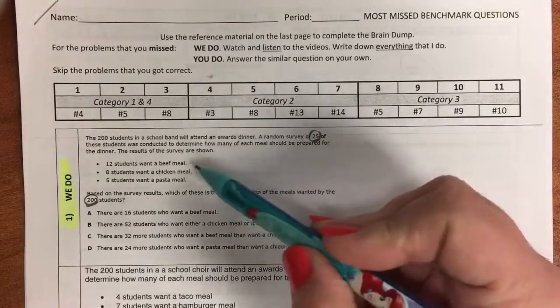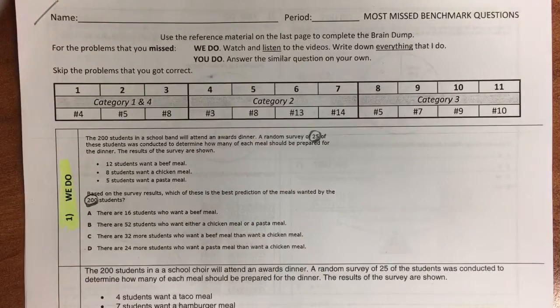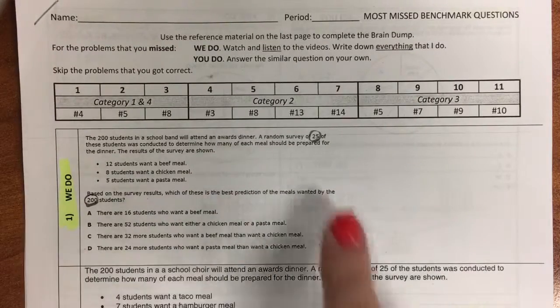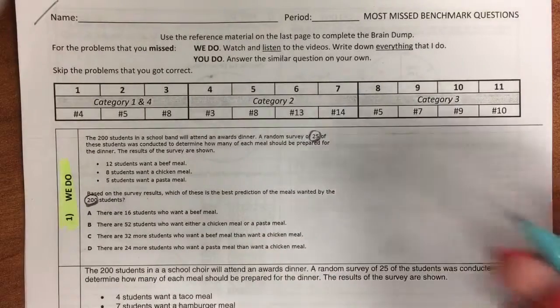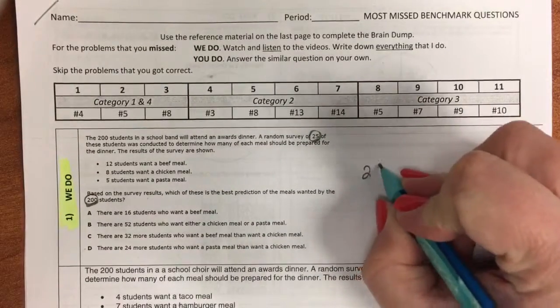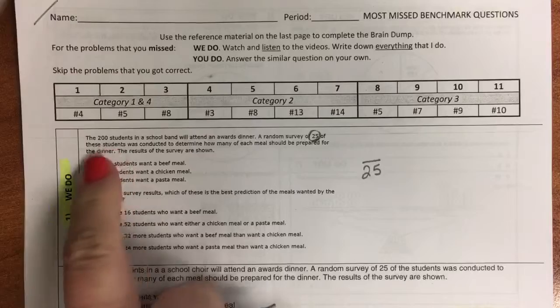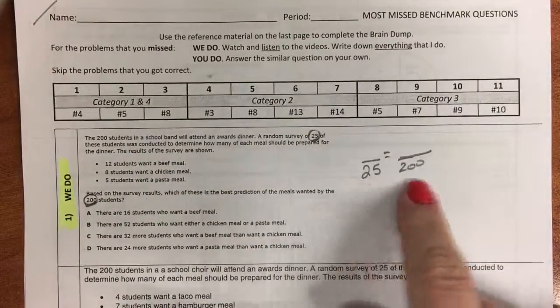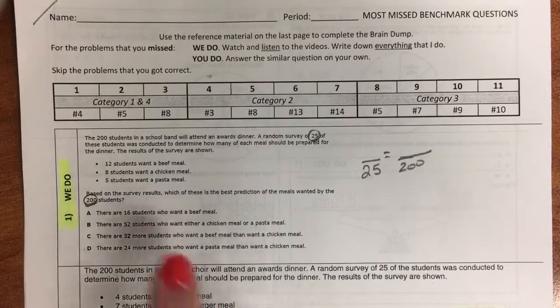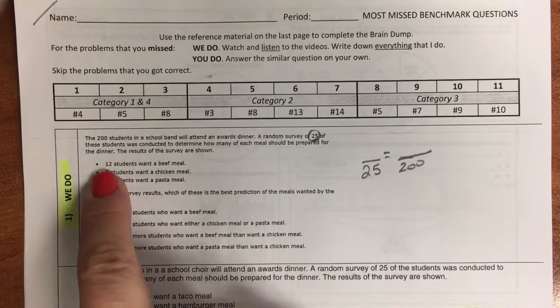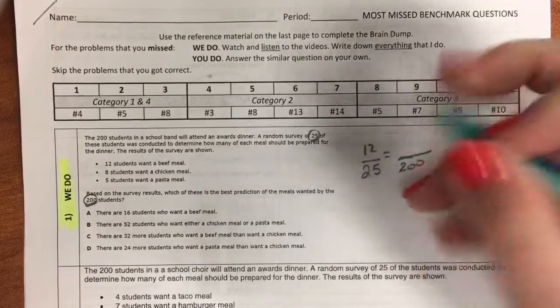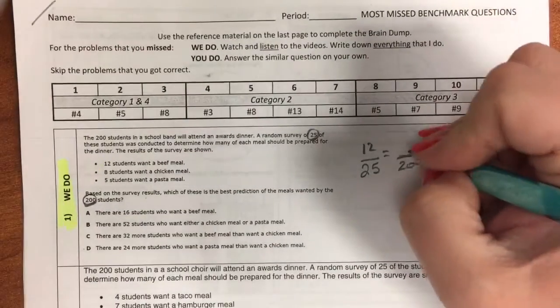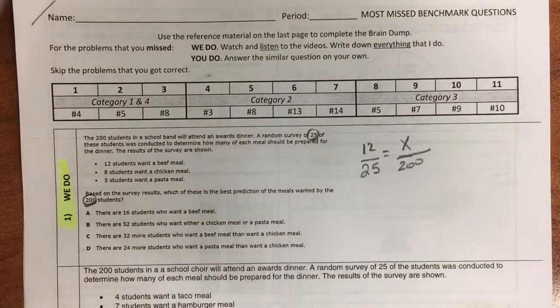So we're going to need to find out each of these, how many students this is representing. So our sample is out of 25, but it's representing the 200. So the total number of students is going to go on bottom. Students who want a beef meal are 12. So 12 out of this 25 is going to give us beef.